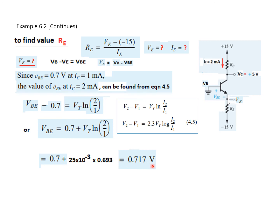Therefore VBE = 0.717 volts. Now we find VE: VE = VB minus VBE = 0 minus 0.717 = −0.717 volts. Now that we have found VE, we still need IE to find RE.